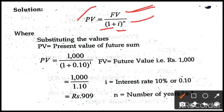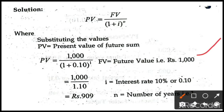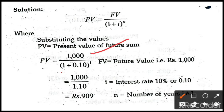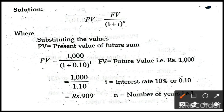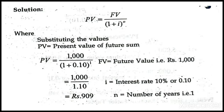PV means present value, future value means how much we receive after one year, r means rate of interest, and n means number of years. Substituting the given information: future value is 1000 rupees, rate of interest is 10 percent or 0.10, and n is 1 year. So: 1000 divided by (1 plus 0.10) to the power 1, which equals 1000 divided by 1.10, giving us 909 rupees. If you invest 909 rupees today, after one year you will receive 1000 rupees.